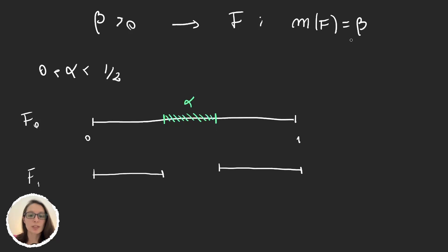And then for the second iteration we will remove the middle α² for each of the intervals and call this final set F₂.